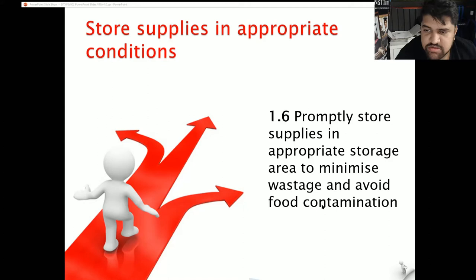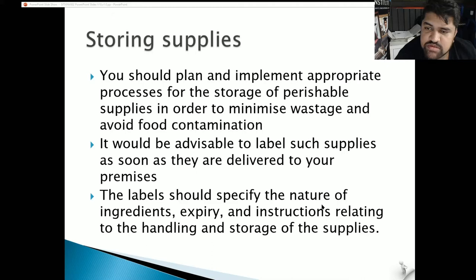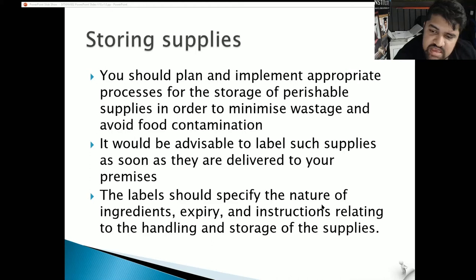1.6: Promptly store supplies in appropriate storage areas to minimize wastage and avoid food contamination. Plan and implement appropriate processes for storage of perishable supplies. Label supplies as soon as they are delivered — labels should specify the nature of ingredients, expiry, and instructions for handling and storage.